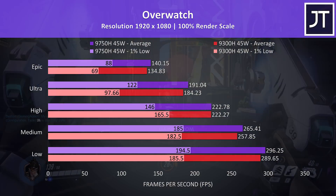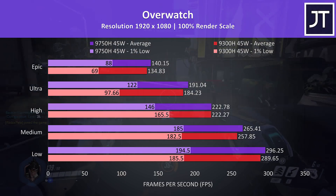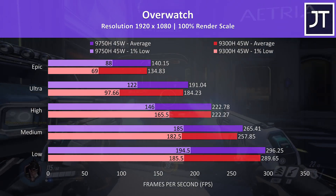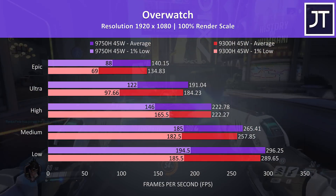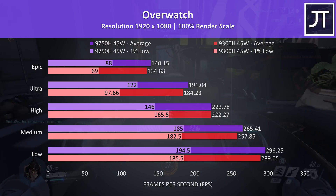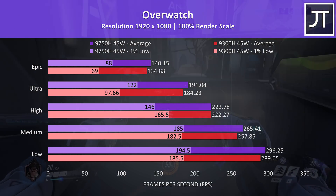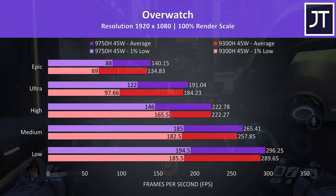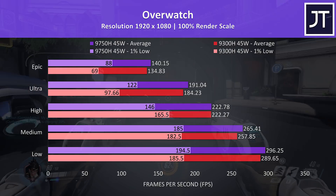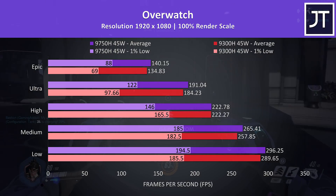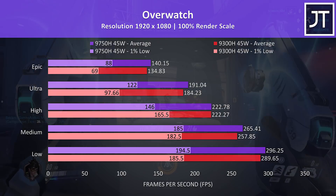Overwatch was tested playing in the practice range, and while this performs better than actual gameplay, it allows me to more accurately perform the exact same test run, perfect for a comparison like this. As another esports title, the CPU matters more compared to many others tested. There was a 4% higher average FPS at max settings with the i7, which makes it the third biggest gain out of all 15 titles tested. The 1% lows were nicely improved at epic and ultra, though the i5 was ahead at high with minor change at medium and low.